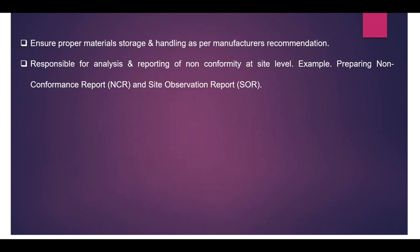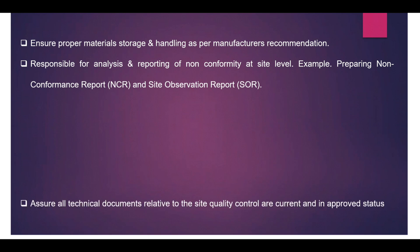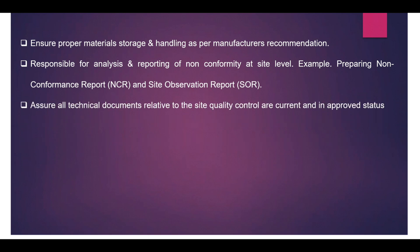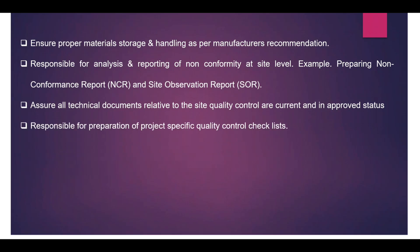If an activity is completely deviating from contract documents, raise an NCR; if there is a minor observation, raise a site observation report. Additionally, ensure all technical documents related to site quality control are current and in approved status. For drawings, there may be multiple revisions (e.g., Revision A, B, C or Revision 1, 2, 3), so as a quality engineer you must ensure that site engineers are executing work against the most recent approved revision to avoid rework.